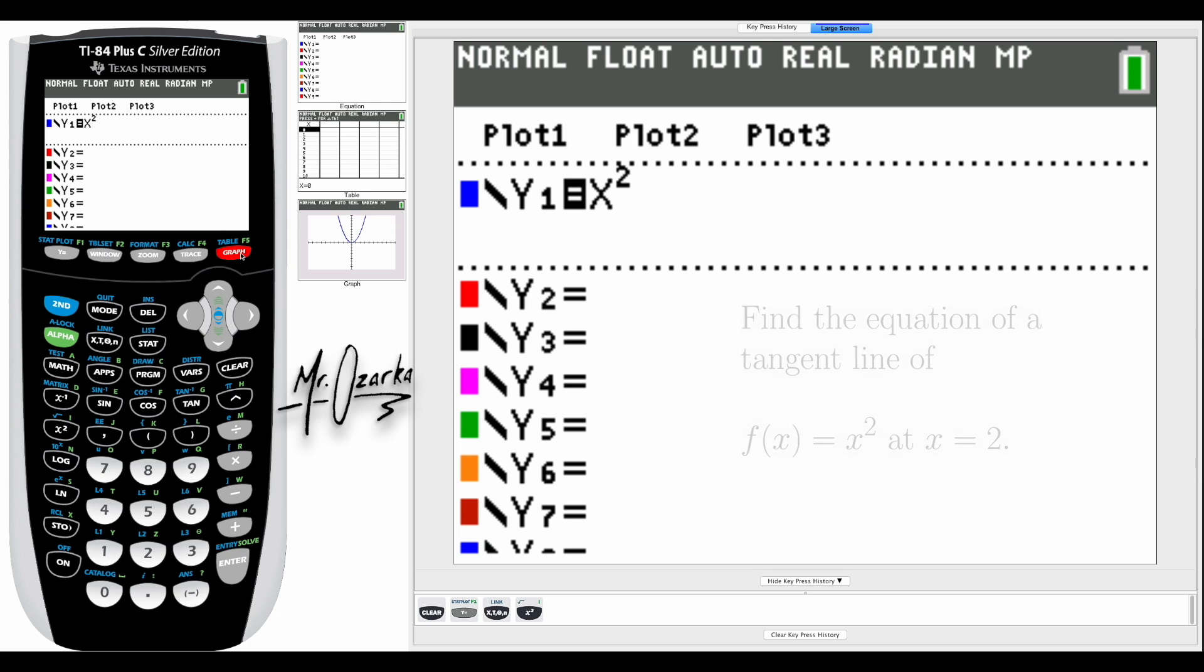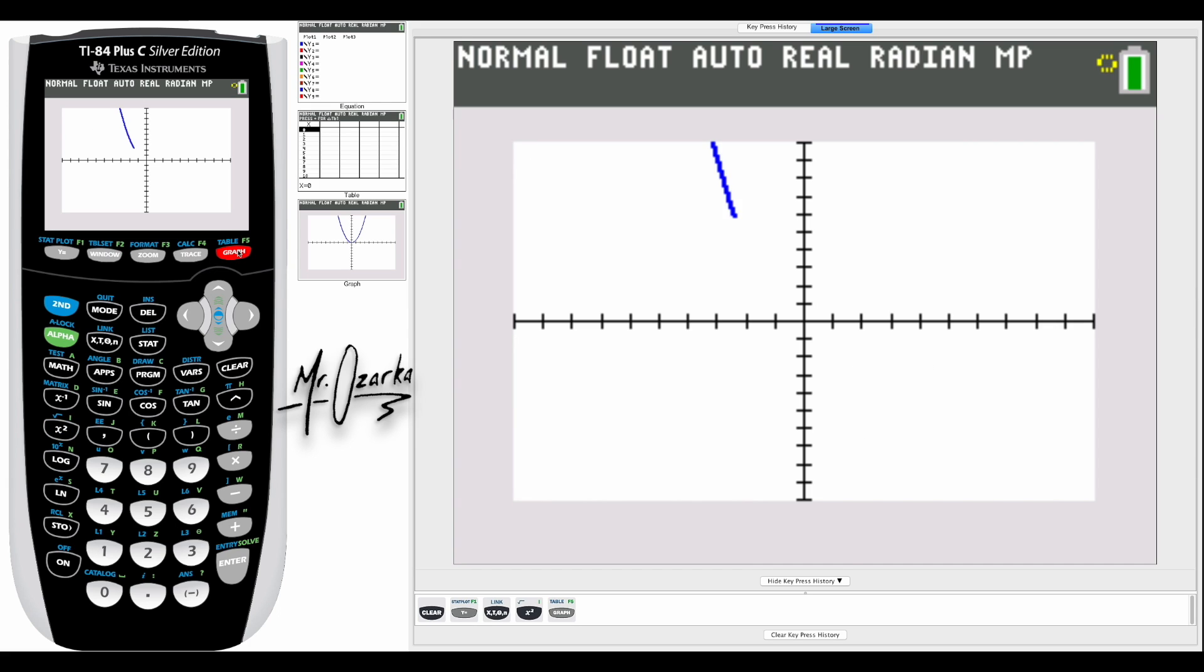First thing you want to do is graph this. I'm going to hit graph and it's going to show up on the screen. From there, to get the equation of a tangent line to show up on the screen as well as the actual equation of that tangent line.